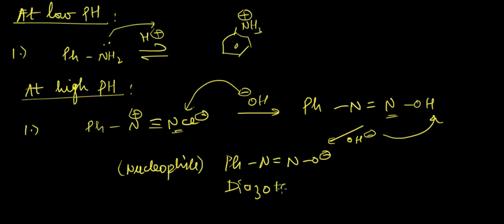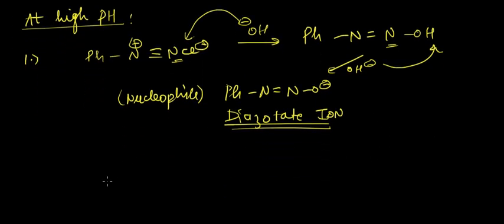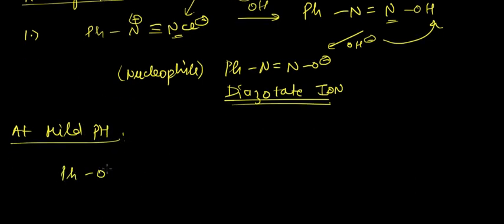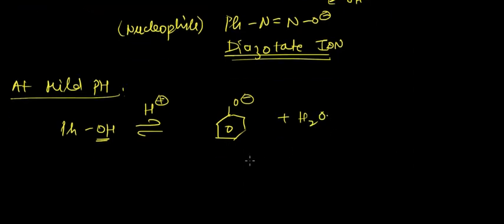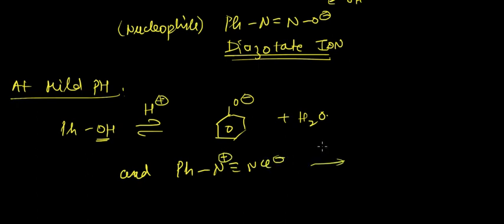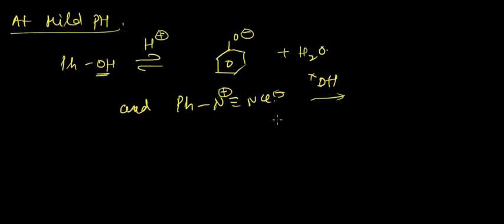At mild pH, when we react phenol — mild pH means low concentration of H+, but phenol is a good acid — phenol converts itself into O- and a water molecule is formed. On the other hand, the diazonium salt would not react with OH- because it's a mild concentration, so this reaction won't go forward.